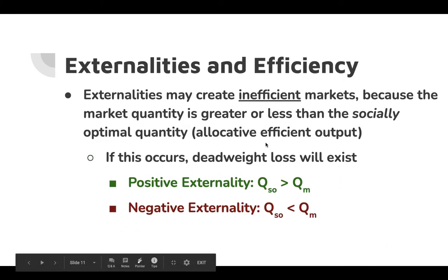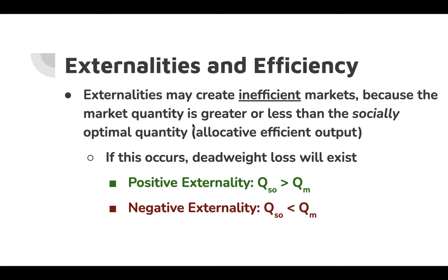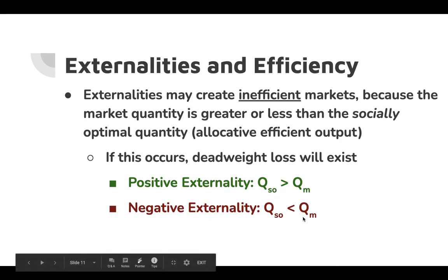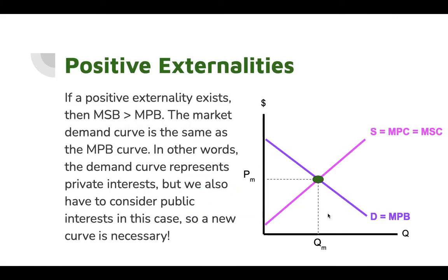How does this tie into efficiency? Externalities may create inefficient markets because if the market quantity is greater or less than the socially optimal — the allocatively efficient output — then we may have deadweight loss. With a positive externality, the socially optimal quantity is greater than the market quantity; society wants more. With a negative externality, it's the opposite — the socially optimal quantity is less than the market quantity; people want there to be less.